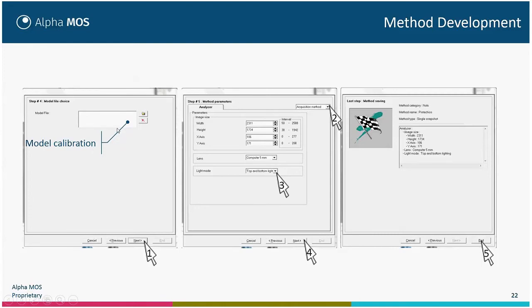Step four is used for model calibration. When you create the method, this is always empty, but after you acquire some data, you can create specific interpretation models and save them. You will modify the method to include the interpretation model — that is the calibration — which will allow automatic treatment of results, giving a simple response such as pass/fail or a quantification of a specific parameter.